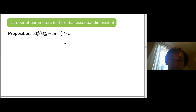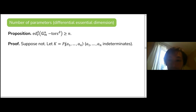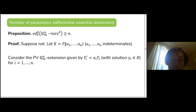The reason is that we understand these well. If we want to write down something that requires at least N parameters, we should use indeterminates A₁ through Aₙ. Recall that G_m^n differential torsors — if we don't want to think about torsors — correspond to Picard-Vessiot extensions.